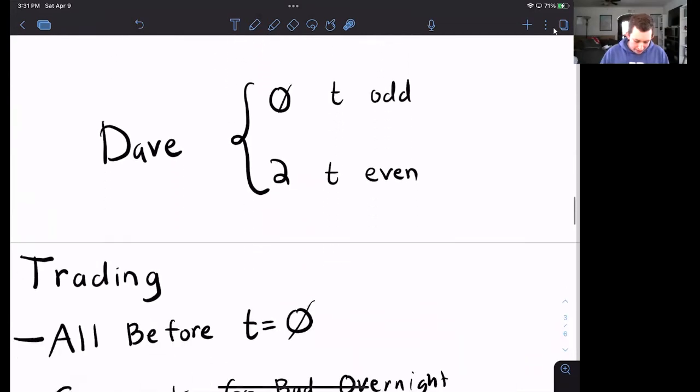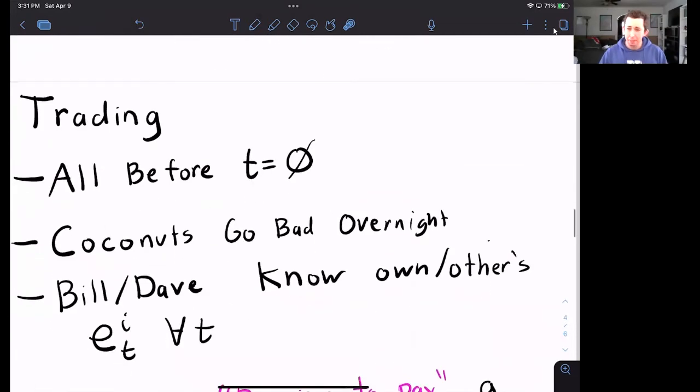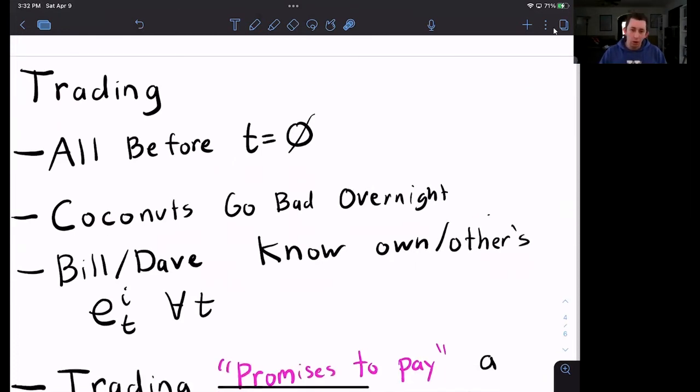Now, trading in this economy all has to happen before time starts. So coconuts go bad overnight, which means that Bill and Dave can't take one of their coconuts and put it under their bed. If they do that, it's going to go bad and they can't eat it tomorrow.